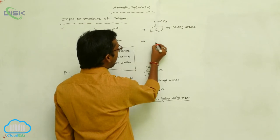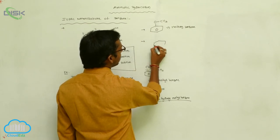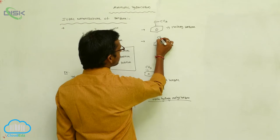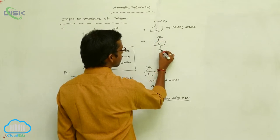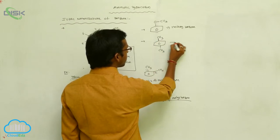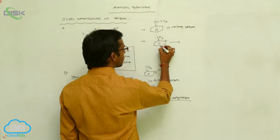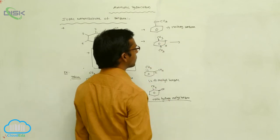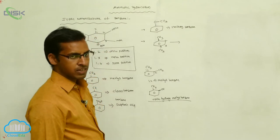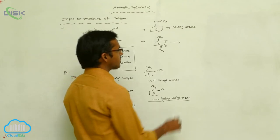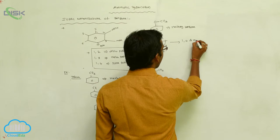On the benzene, your methyl group is the substituent. This is position 1, this is 2, this is 3, this is 4. At the 1,4 position, the methyl group is present. So the name of this compound is 1,4-dimethylbenzene.